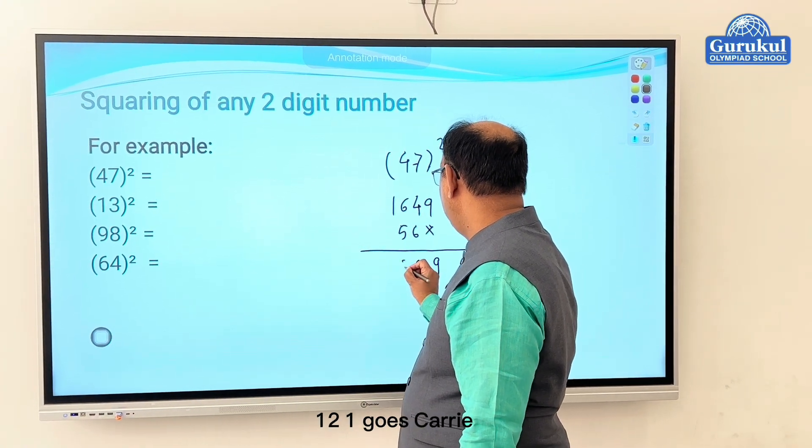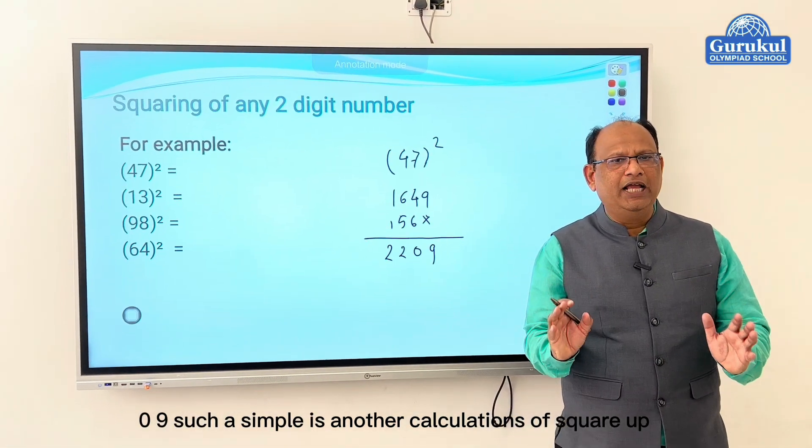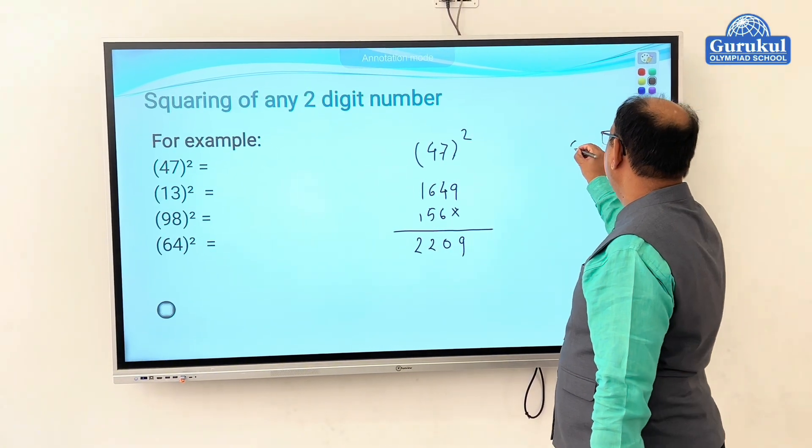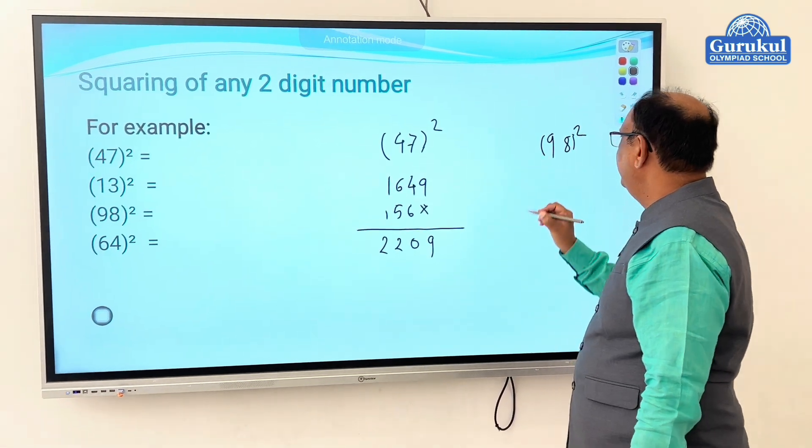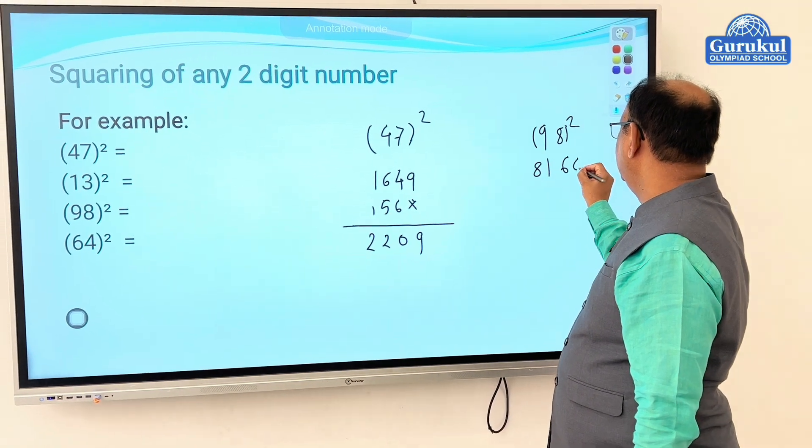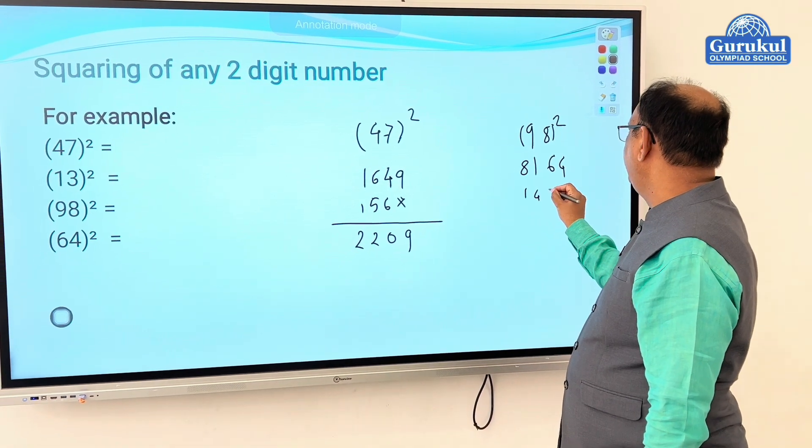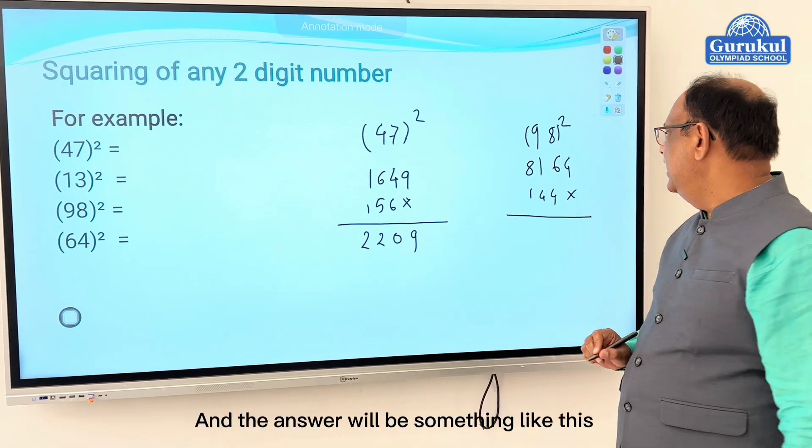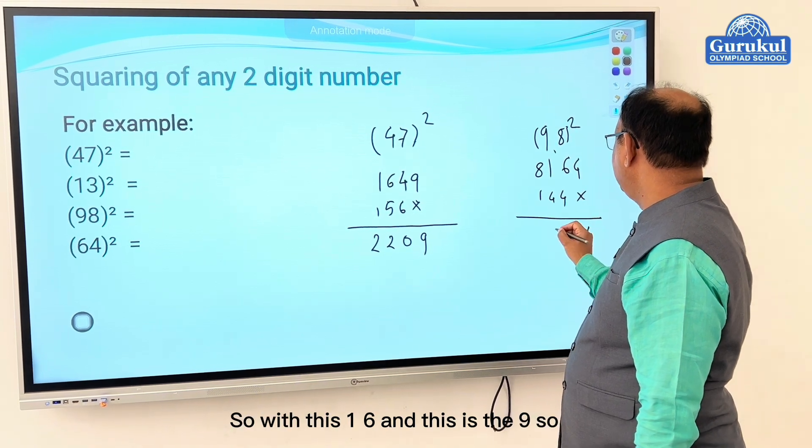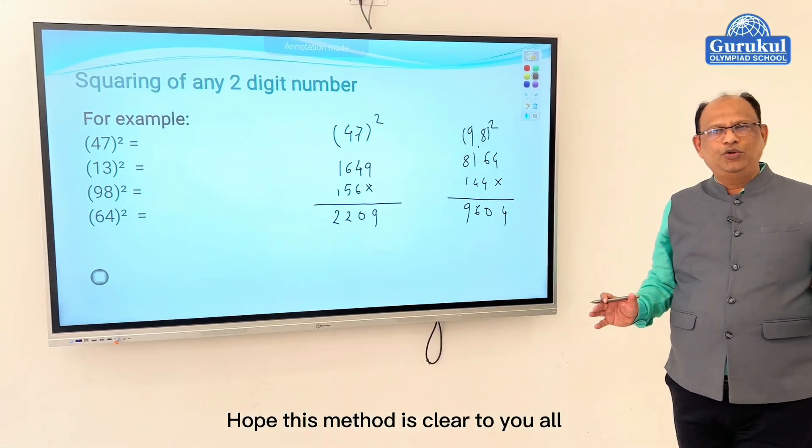And your answer is available. So the answer will be nine, which makes ten, so one carries. Six plus four is twelve, one carries, and the answer is 2209. Such a simple calculation. You can try it out for any other number. Let's say 98 squared.